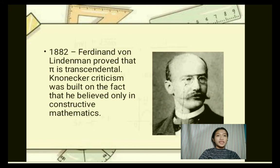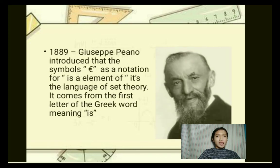In 1882, Ferdinand von Lindemann proved that Pi is transcendental. Kronecker was troubled by this, as he believed only in constructive mathematics. In 1889, Giuseppe Peano introduced the symbol ∈ as notation for 'is an element of' in the language of set theory. It comes from the first letter of the Greek word meaning 'is'.